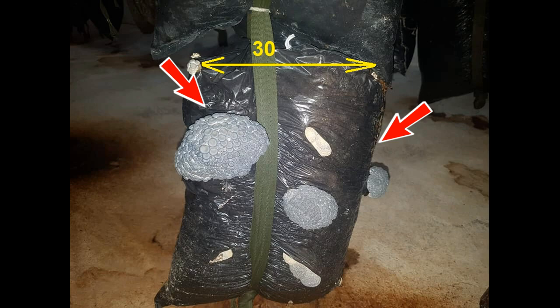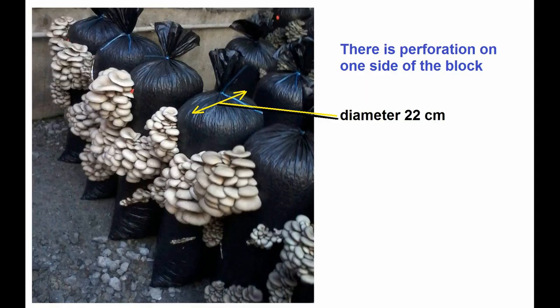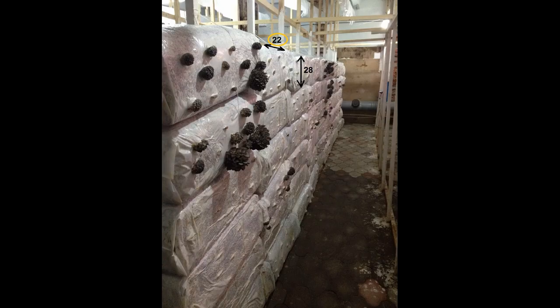My opinion is that the most suitable diameter for blocks is from 15 cm to 23 cm. Blocks with a diameter of 15 to 17 cm are used when sterilizing the substrate. If you are processing with hot water or disinfecting raw materials with chemicals, it is most convenient to make blocks from 20 to 23 cm in diameter. If the blocks are rectangular, at least one of the sides must be 22 cm for good overgrowing of the substrate.